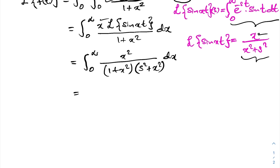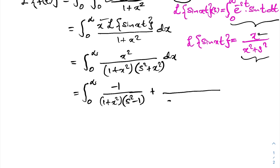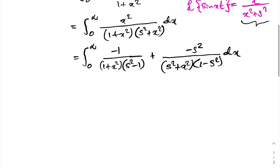To find the partial fraction decomposition, we can use the cover method. First I take one plus x squared, and plug in x squared equals minus one, giving minus one. Then I take s squared plus x squared and plug in x squared equals minus s squared, giving one minus s squared.